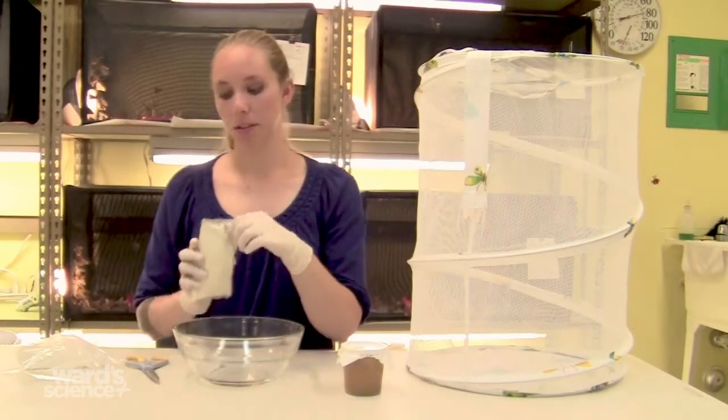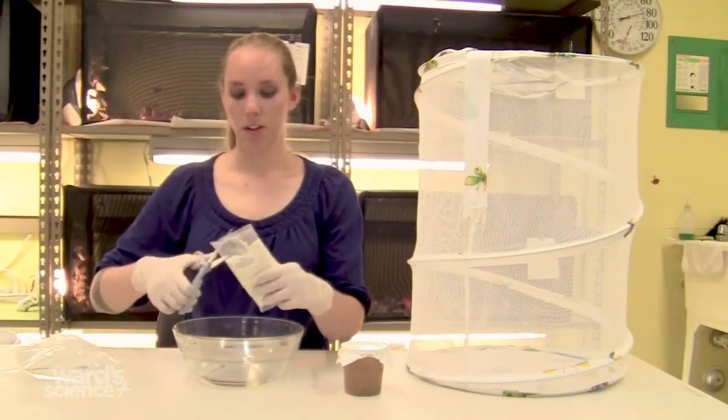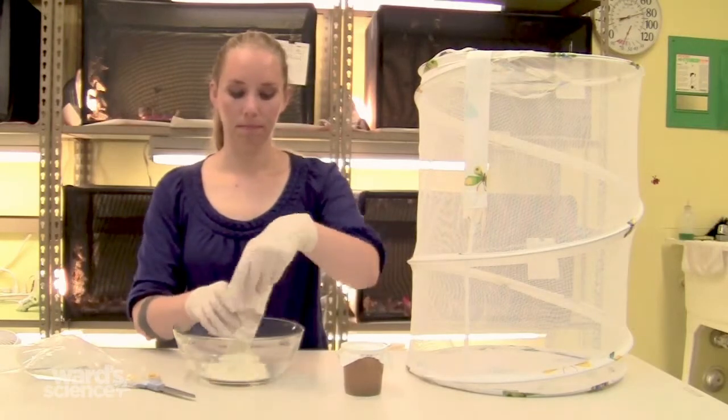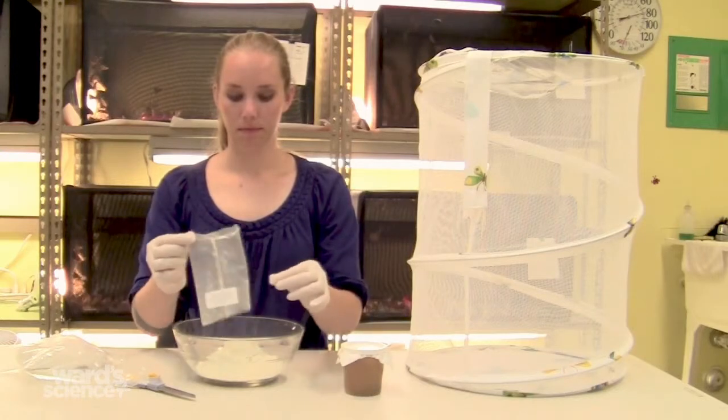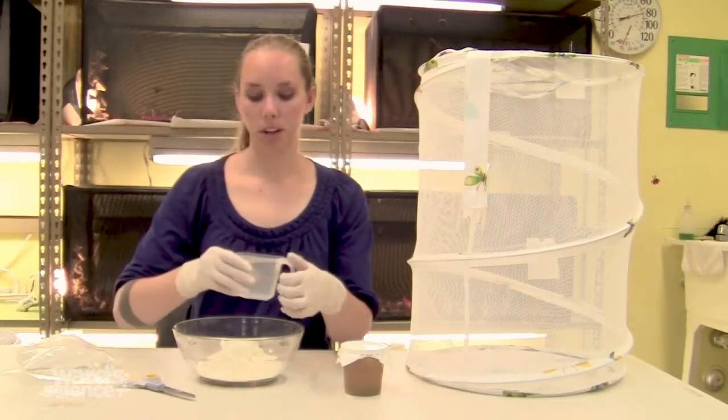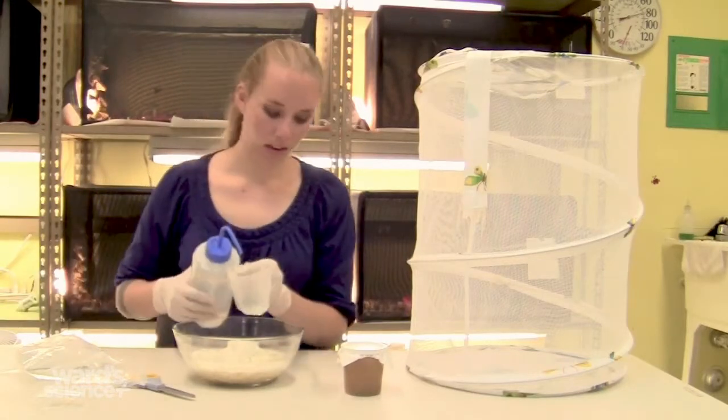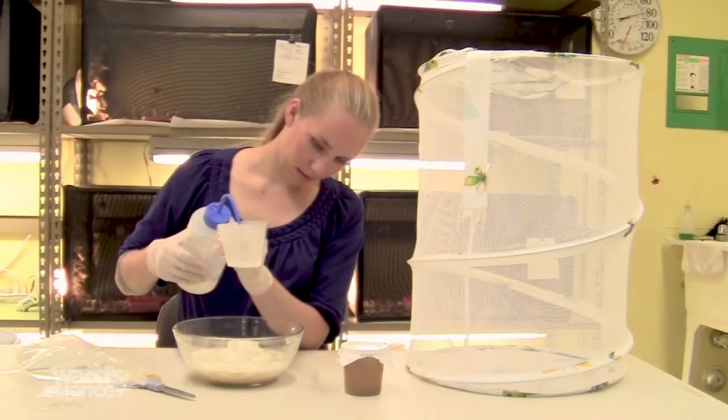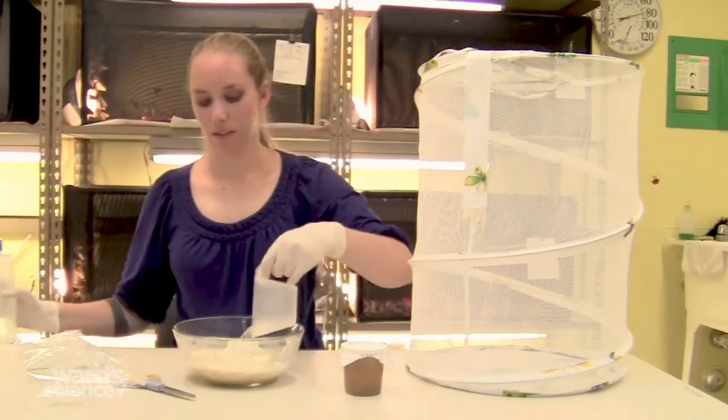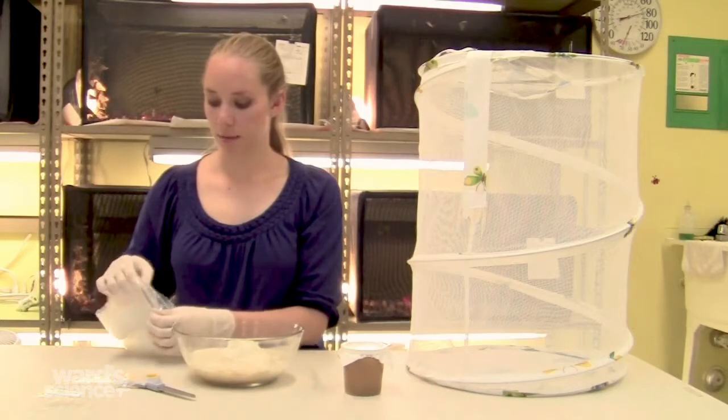When you're ready to transfer the larvae into the cups, you'll need to mix the food that we've sent with the kit. You can cut open the bag and pour the dry food into a bowl. Then add one and one-quarter cups of water and mix the food until it becomes the consistency of cookie dough.